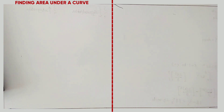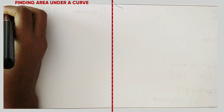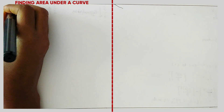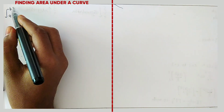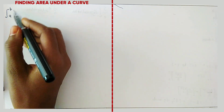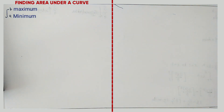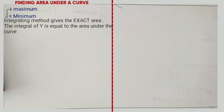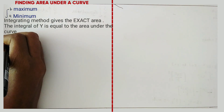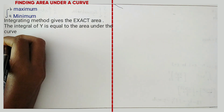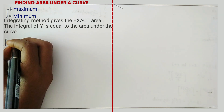Before that you should know the integral sign. We have limits B and A, where B is the maximum limit and A is the minimum limit. You should know that the integration method gives the exact area, and the integral of Y is equal to the area under the curve.